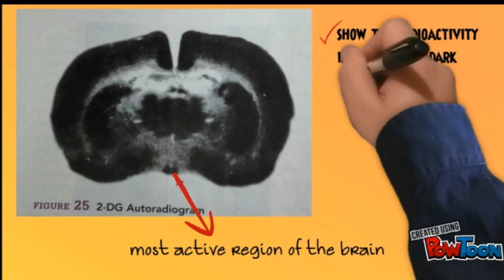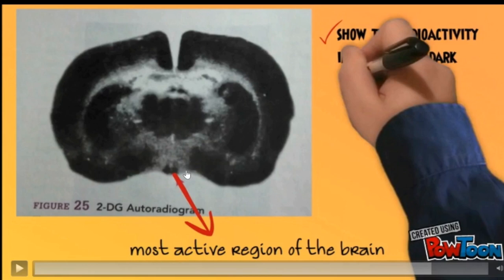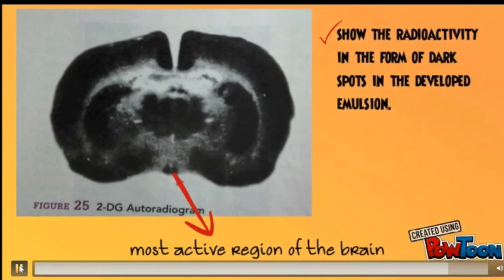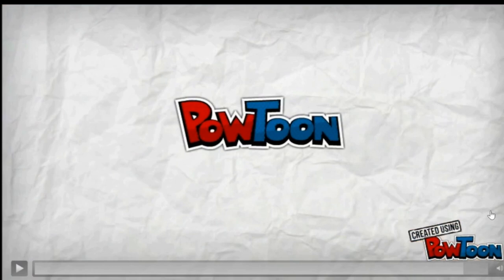That region denotes the most active area of the brain. How we can understand that is the most active area? Because the radioisotopes accumulate more concentration in that area. With response to that, a high dark color can be observed in that particular area. Let's talk about this procedure.